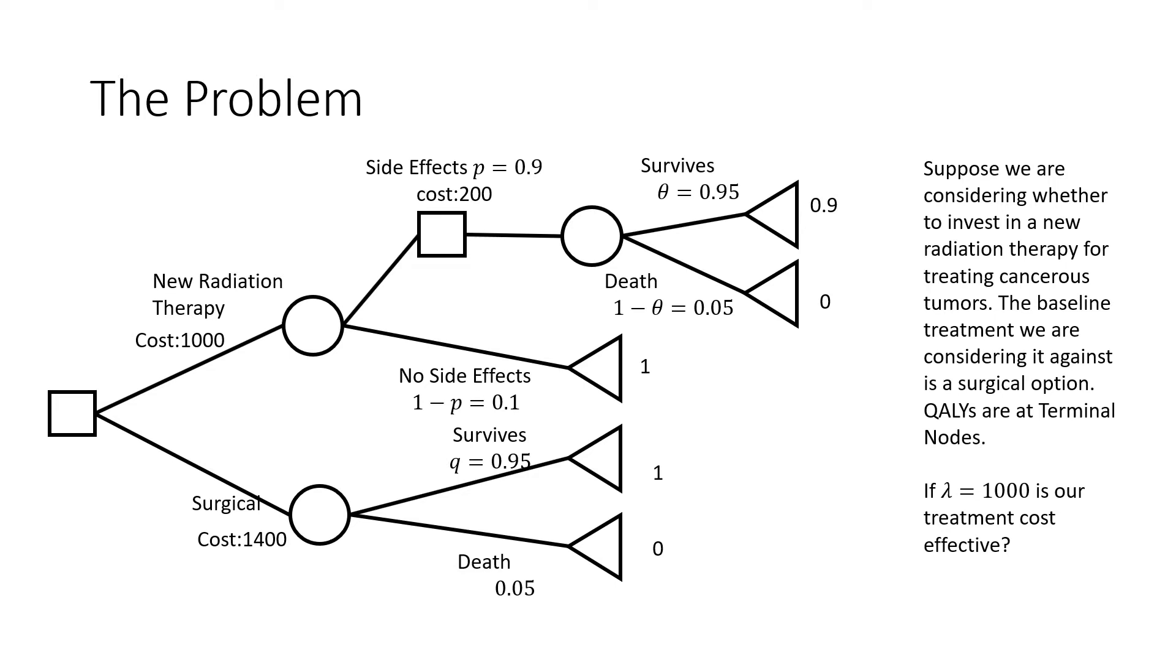Just some comments before we move into the problem. We're moving from a decision node where we have two choices that move into chance nodes. In our upper side, we have a case where there would be side effects associated with the radiation therapy, and in a case where there are side effects, you pick up a cost there.